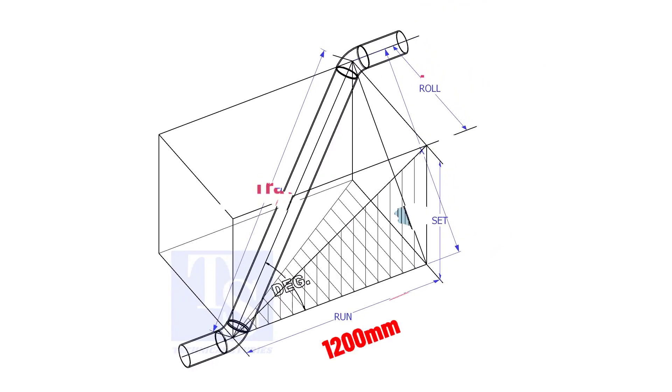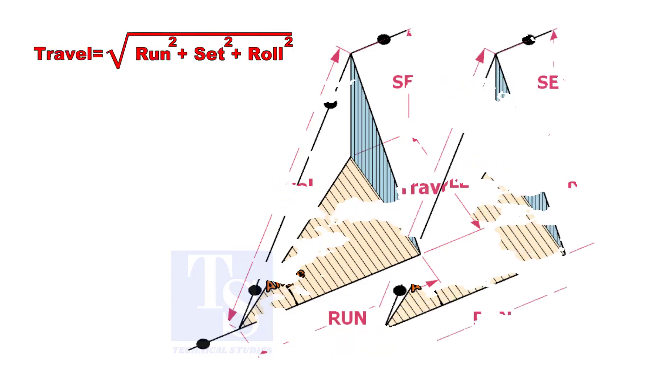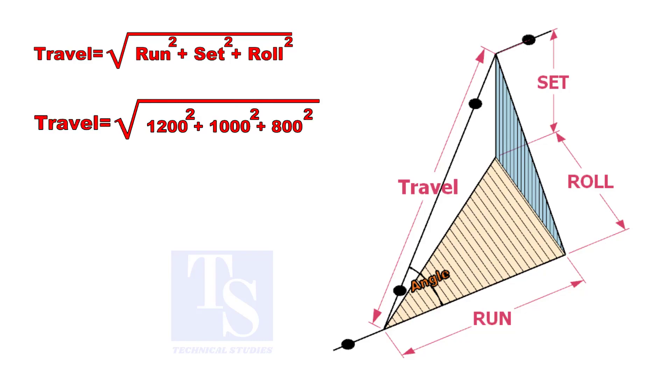Assume that the run is 1200 mm, set is 1000 mm, and the roll is 800 mm. Calculate the travel length. Let us calculate.